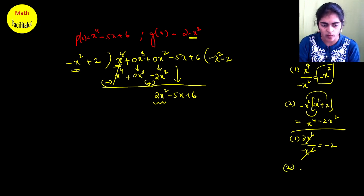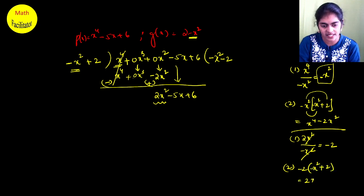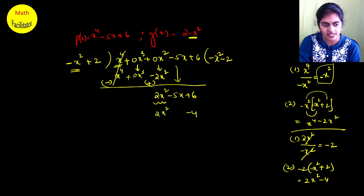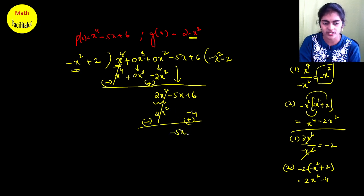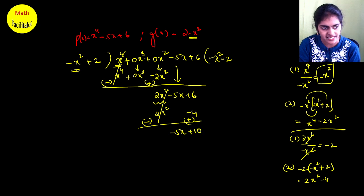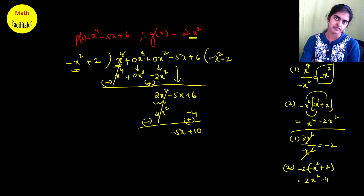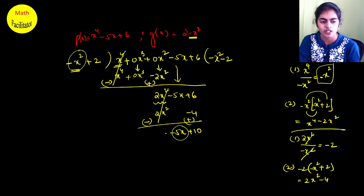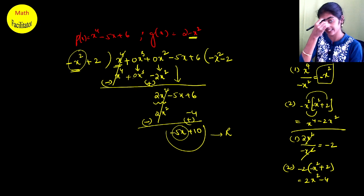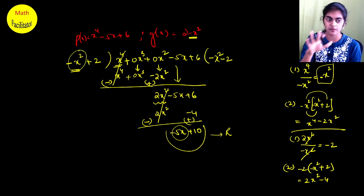Step two: multiply -2 by the divisor -x² + 2, giving 2x² - 4. Write this here. Subtract: 2x² and 2x² cancel, -5x comes down as is, and 6 - (-4) = +10. The new dividend is -5x + 10. Check the degree: the divisor has degree 2 and -5x + 10 has degree 1, so this is your remainder and you stop the division.